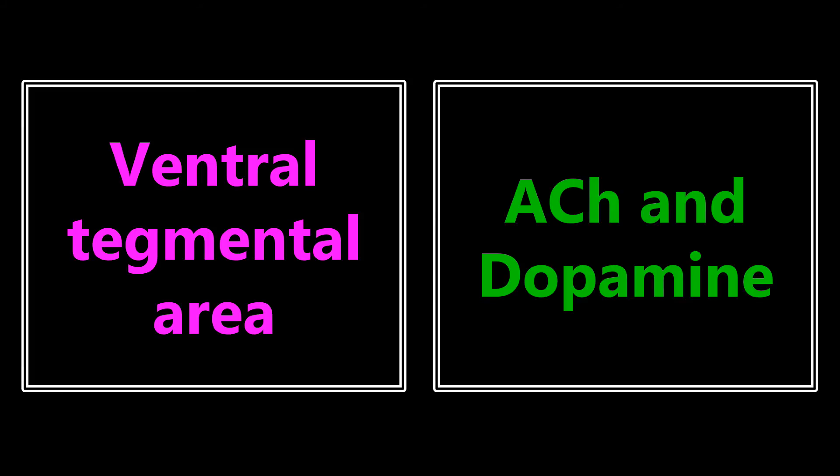Ventral tegmental area — identify what neurotransmitters are produced here. In this case, it's two: acetylcholine and dopamine.